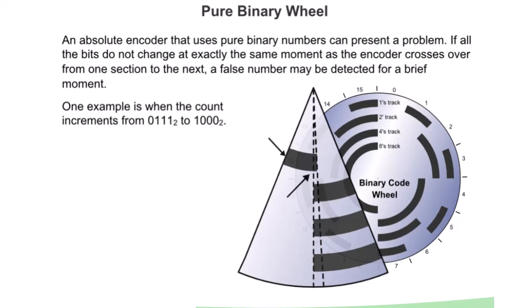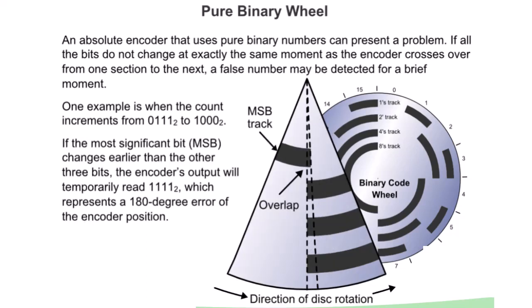One example is when the count increments from 0111 to 1000. If the most significant bit changes earlier than the other three bits, the encoder's output will temporarily read 1111, which represents a 180 degree error of the encoder position. To avoid this problem, another binary number system called the gray code is used instead.